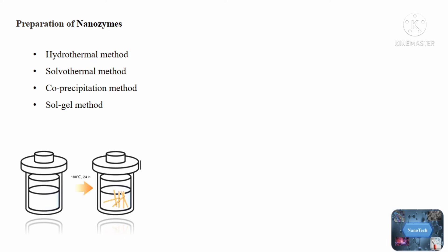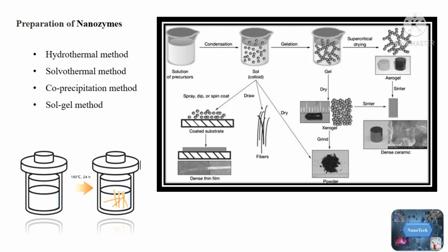The solvothermal method is commonly used in the preparation of nanozymes. Solvothermal synthesis is the use of a solvent at high temperatures, typically between 100 and 1,000 degrees Celsius, and high pressures, typically between 1 and 10,000 atm, to prepare a wide range of materials such as metals, metal oxides, and semiconductors.